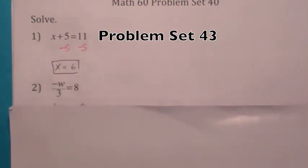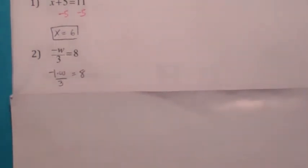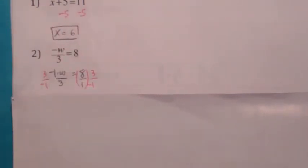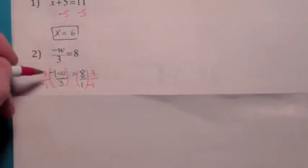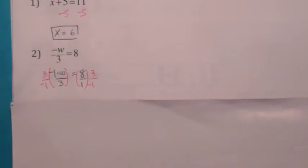If a number is multiplying your variable, you multiply by the reciprocal of the coefficient. The coefficient of w is negative 1 third, so you multiply by the reciprocal, which would be 3 over negative 1. Let's call this 8 over 1. On the left side, the 3's and the negative 1's cancel, so on the right side you get 24 over negative 1, which is just negative 24.